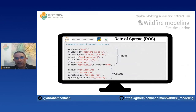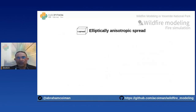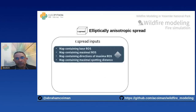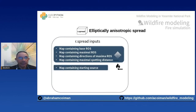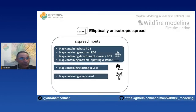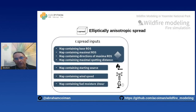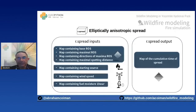For the r.spread module, the inputs are: all outputs from the r.ros module, a raster map of the starting source (explained next), a raster map of wind speed, and a raster map of one-hour dead fuel moisture content. The r.spread module generates a raster map of cumulative time of spread.